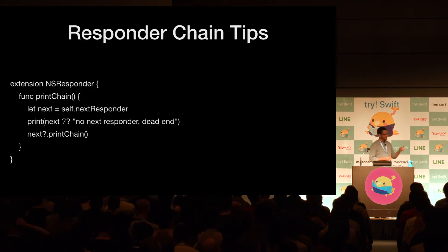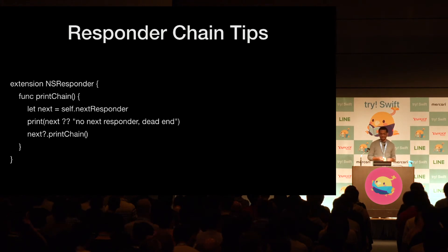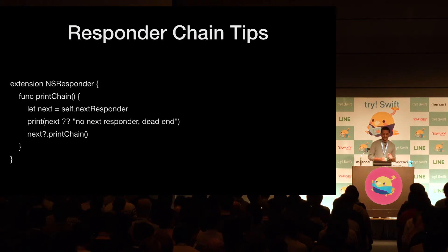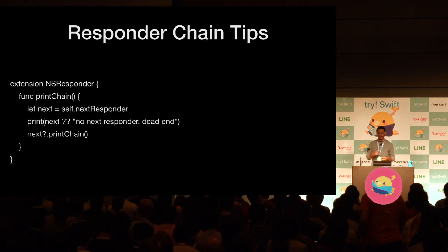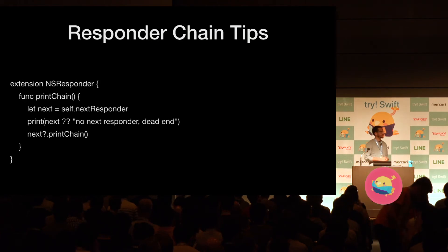You can drop this method into your projects for easier debugging. A similar method can be used in iOS as well. This way you can quickly see what is currently in the chain and maybe answer the question, why isn't my method executing? Sometimes your objects aren't in the chain when you expect them to be, so it's always good to look.